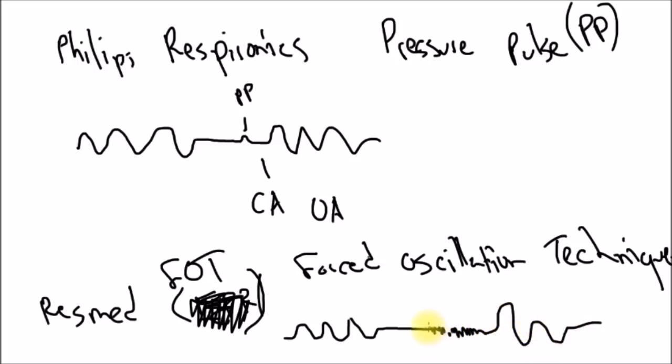So a lot of people are like, oh my God, I'm having a seizure. No, you're not having a seizure. It's forced oscillation technique. It's trying to do two things. One, these are like pressure pulses where it gets the same feedback, and it can say, oh, it's open or it's closed. And it can say either CA or OA, obstructive apnea.